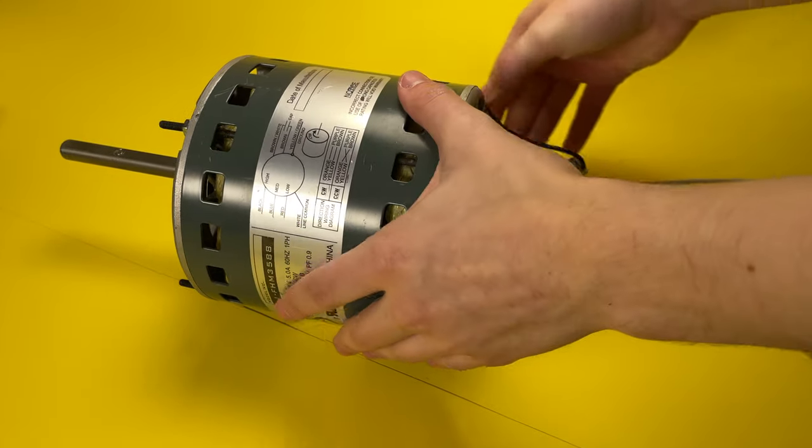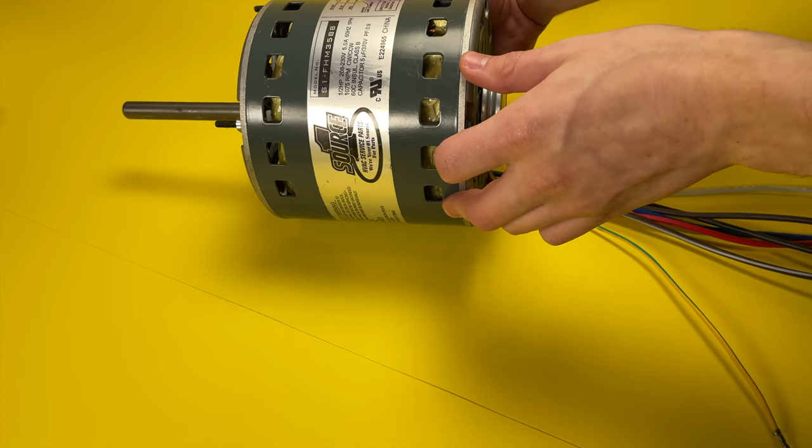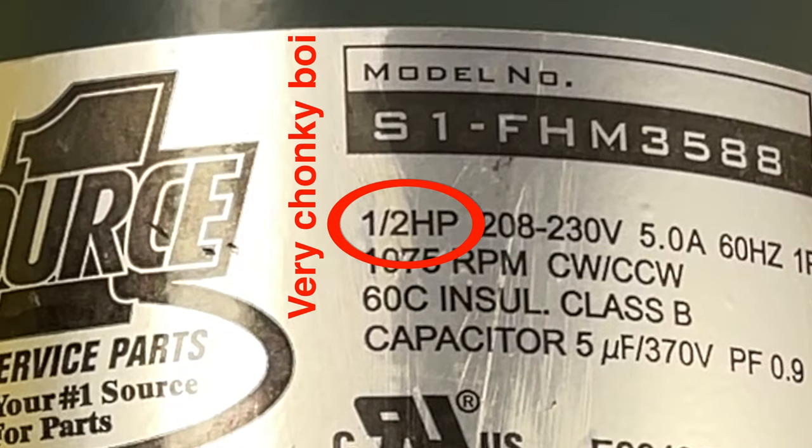Hey, it's LEGO Technics Rule, and I have a great project to show you today. I recently got my grubby little hands on one of these. It's a blower motor from a furnace. And you can see here that it's quite a beast of a motor because it's one half horsepower.